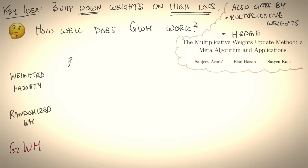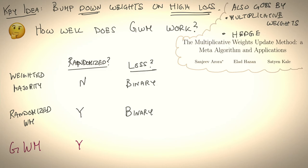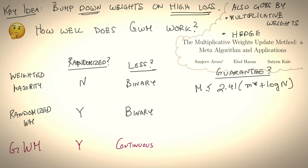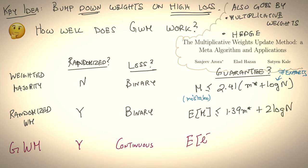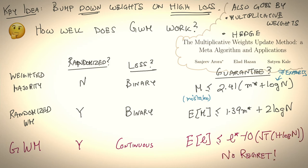Let's compare the three algorithms we've seen thus far. Recall that weighted majority was not randomized, and that led to a lot of problems. The other two algorithms are. What makes GWM unique is that it can deal with continuous loss while the other two algorithms dealt with binary loss. Weighted majority had a mistake bound roughly twice as many mistakes as the best expert, randomization slashed that factor almost by half, and GWM is able to achieve no regret.